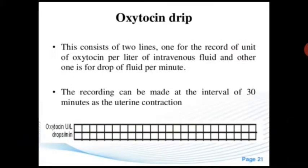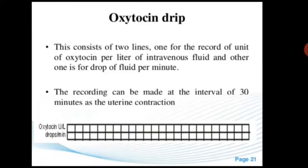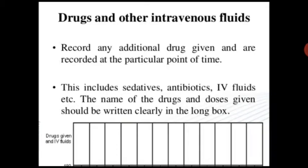Oxytocin drip consists of two lines: one records the units of oxytocin per liter of IV fluid, and the other records the drops of fluid per minute. Records can be made at 30-minute intervals. Drugs and other IV fluids: record any additional drugs given, including sedatives, antibiotics, IV fluids, etc. The name of the drug and doses given should be written clearly in the long box.